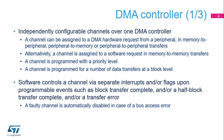Each channel of the DMA controller is independently configurable. A channel can be assigned to a DMA hardware request from a peripheral in peripheral-to-memory, memory-to-peripheral, or peripheral-to-peripheral data transfers. A channel is programmed with a priority level and for a number of data transfers at a block level. The software can control a channel via separate interrupts and/or flags upon programmable events such as block transfer complete, half block transfer complete, or transfer error.